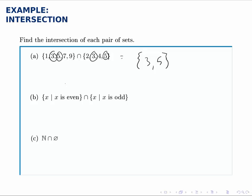In part B, we again ask ourselves what elements belong to both sets at the same time. Notice this is going to be the empty set because by definition, even and odd numbers are all different.